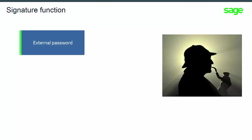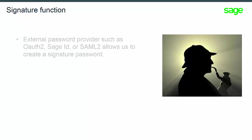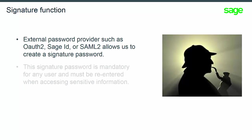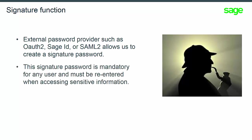In creating a user, we have several choices of authentication. OAuth2, SageID, and SAML2 allow us to associate a new signature code to the user. The idea behind this feature is to oblige the end user to re-enter their credentials when making sensitive modifications.